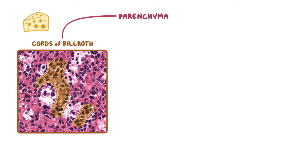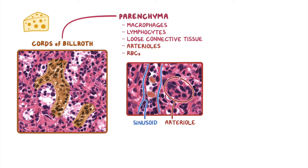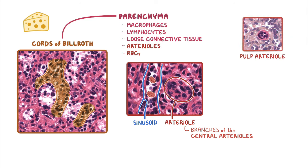The parenchyma is a combination of macrophages, lymphocytes, loose connective tissue, arterioles, and RBCs that move from arterioles to sinusoids. The arterioles in the red pulp are continuations or branches of the central arterioles found in the white pulp. The arterioles are no longer surrounded by lymphocytes, and are simply called pulp arterioles.